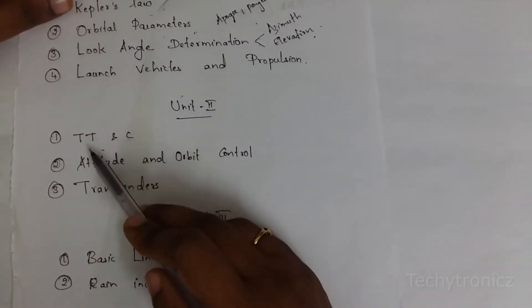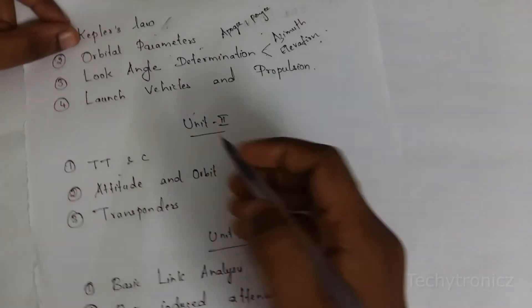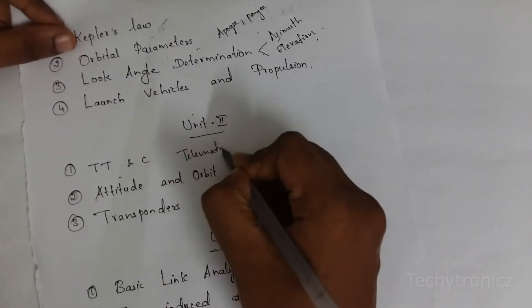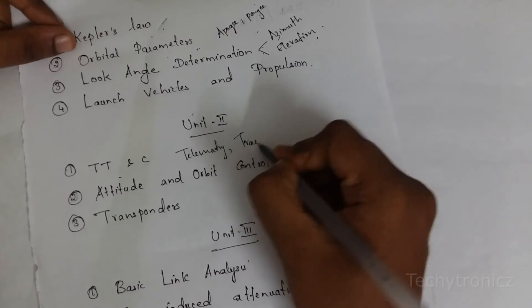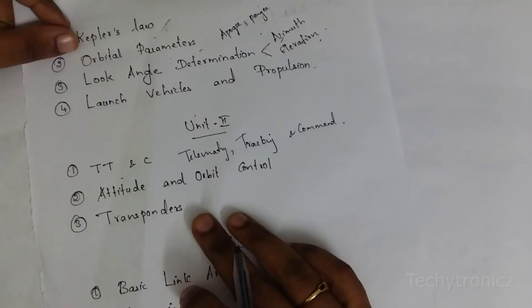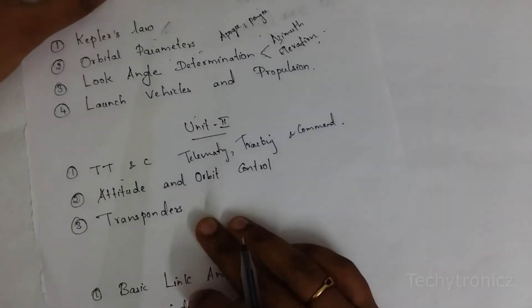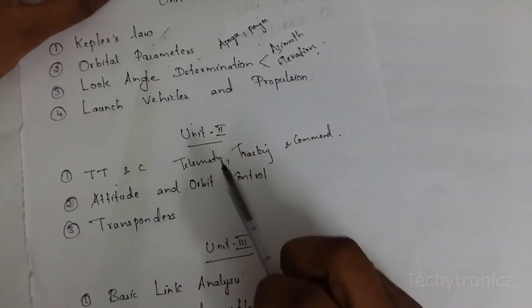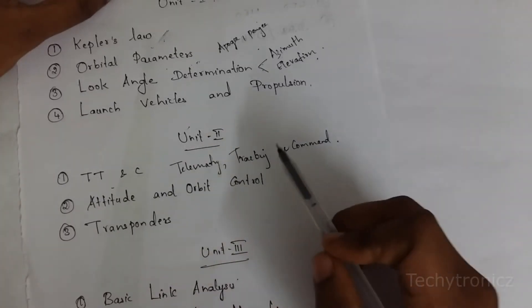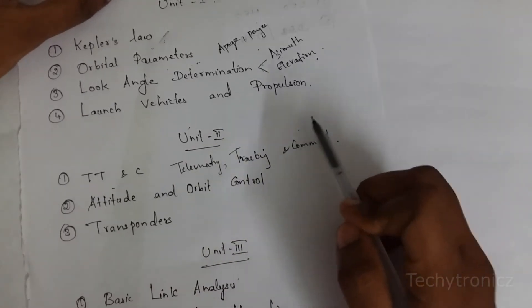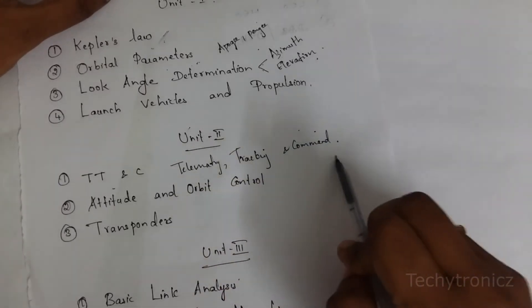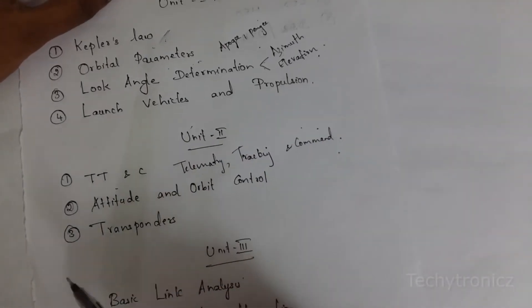When you go to unit 2, the most important question is TT&C — that is telemetry, tracking and command. This is one of the most important questions; in many question papers they have asked this question. It contains one block diagram, and using that block diagram you have to explain telemetry, tracking and command. It is one of the simple questions, so please learn it.